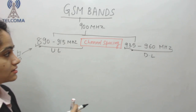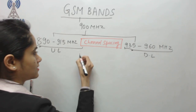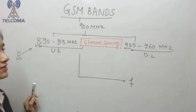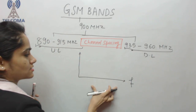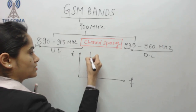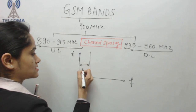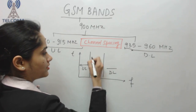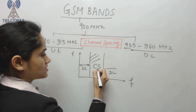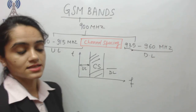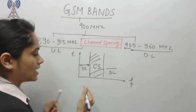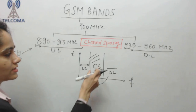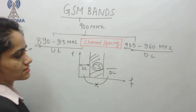In FDD (Frequency Division Duplex) mode, we divide the spectrum so that one part is uplink and another is downlink, with channel spacing in between. Channel spacing is required so that uplink frequencies do not interfere with downlink frequencies.